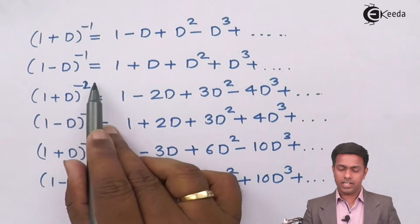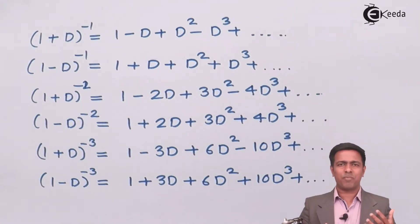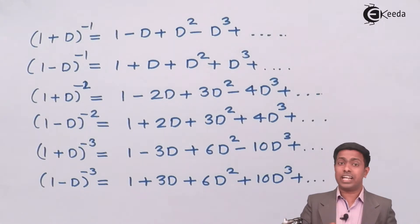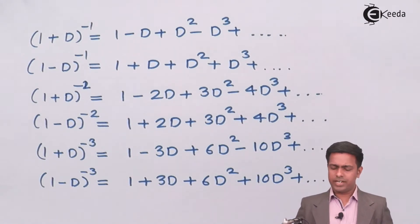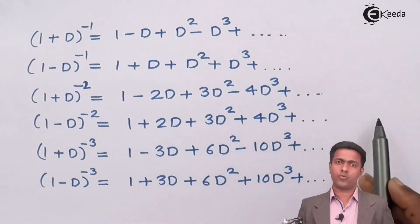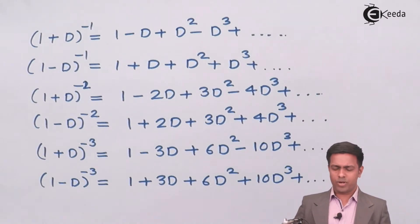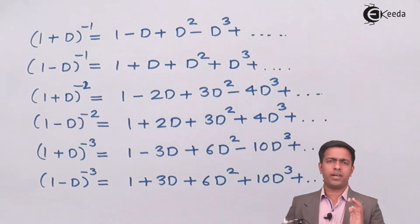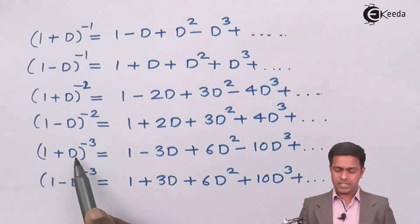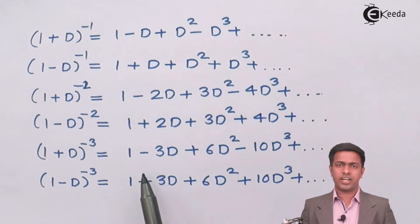For (1 + D) raised to minus 2 and (1 − D) raised to minus 2: again, if the middle sign is negative all terms are positive, and if the middle sign is positive we get alternating plus and minus. The power of D increases by 1 each step.